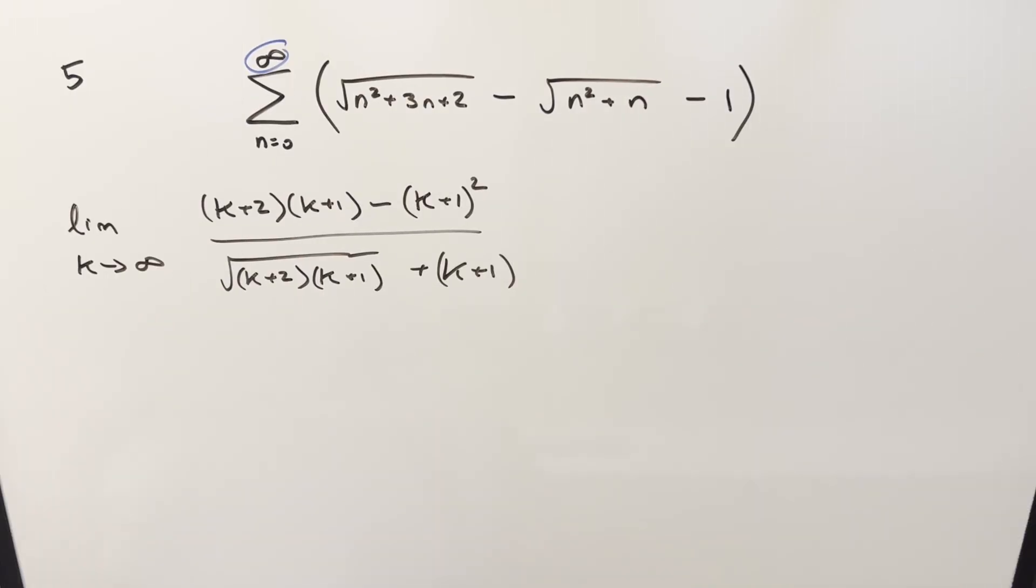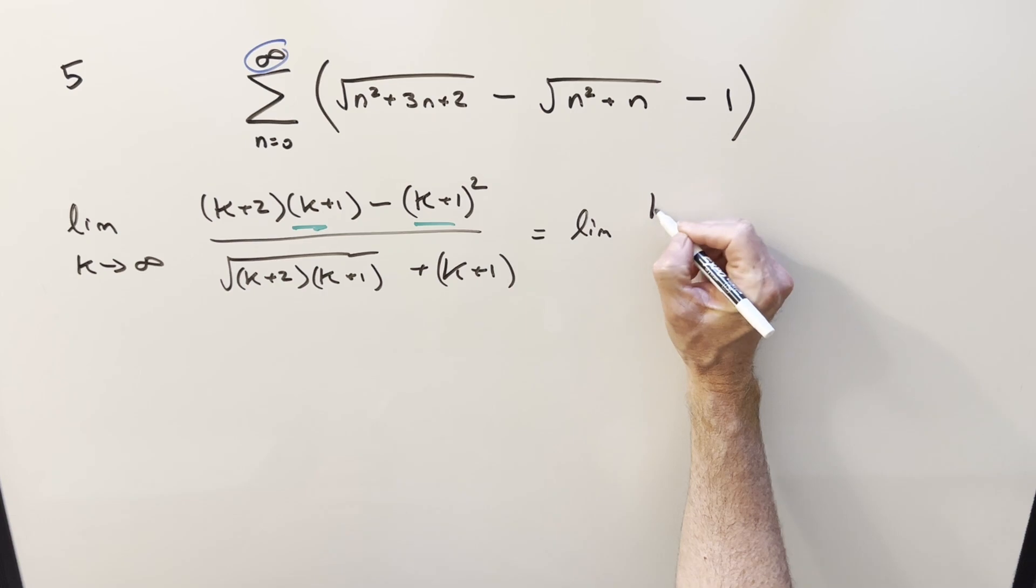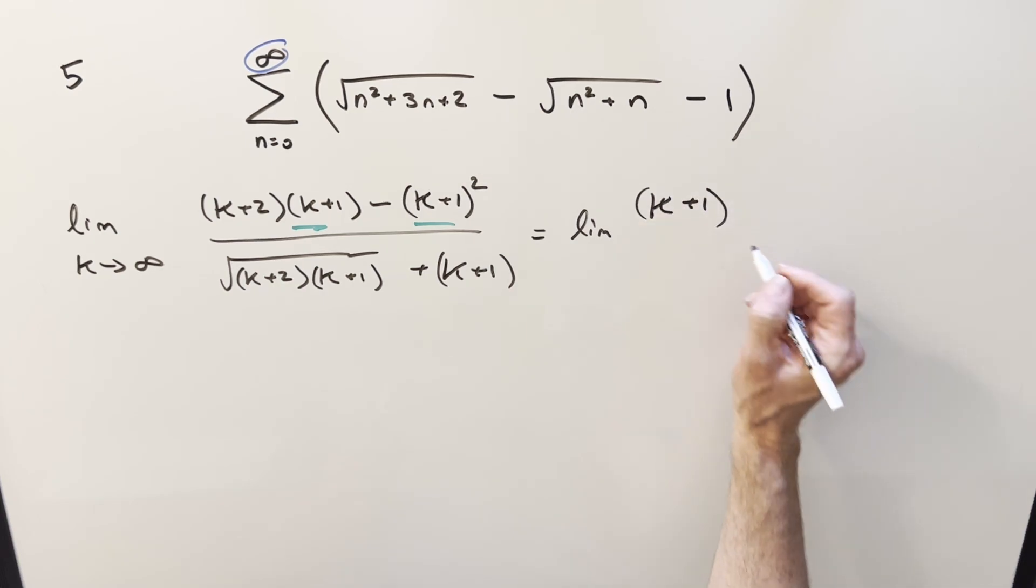Okay. Now from here, we have something in common. We've got k plus one in both cases. So I can factor that out in the numerator. So we'll do k plus one in front here. But then here, I'll write it out.